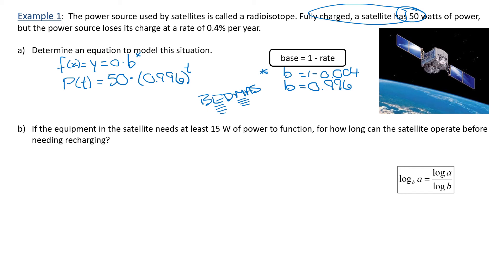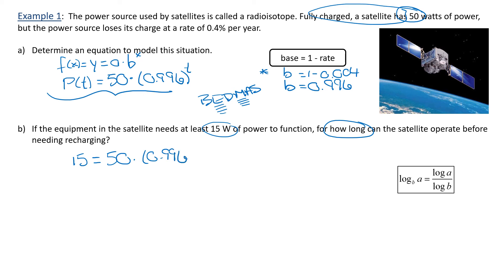Part B says: if the equipment in the satellite needs at least 15 watts of power to function, for how long can the satellite operate before it needs recharging? The 15 goes in for P(T) — that's our Y value, the power at some unknown time. So we have 15 equals 50 times 0.996 to the power of T. We can divide both sides by 50, giving us 0.3 equals 0.996 to the power of T.